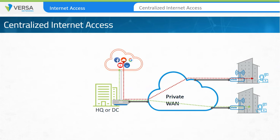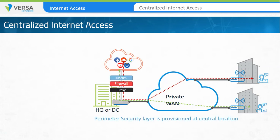At the centralized location, firewalls, proxy servers, IDS, IPS, antivirus, and other services are provisioned at the internet edge in order to protect the internal networks from security vulnerabilities.